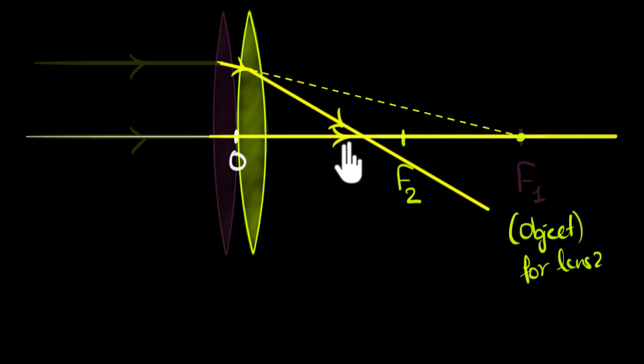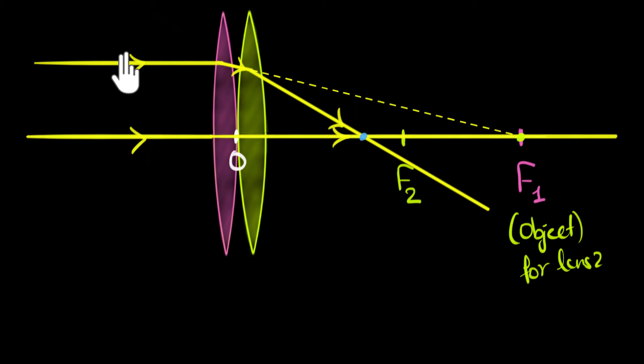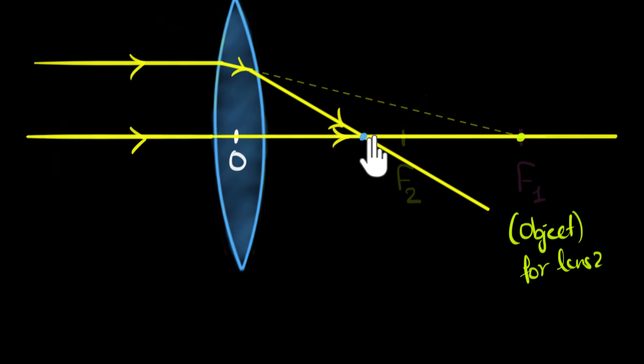And so the final image is formed somewhere over here, at this point. If you now look at the complete picture, what we are seeing is that the parallel rays of light are eventually getting focused at this point. Which means, if you think from that effective lens point of view, then we can say that this itself is where the parallel rays of light are being focused. So this must be the effective principal focus, and this would be the effective focal length, and we need to figure out how much that is.